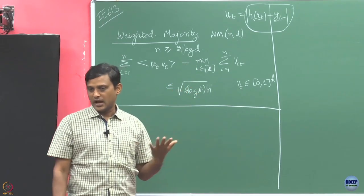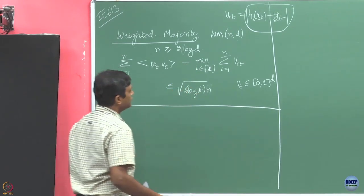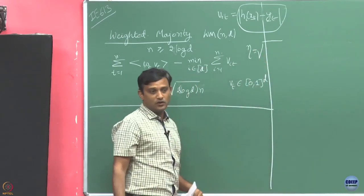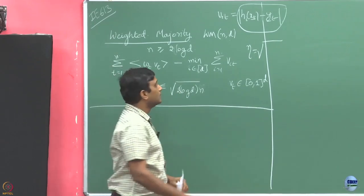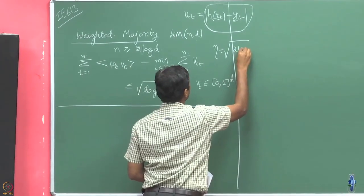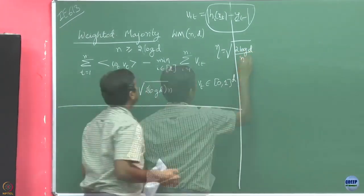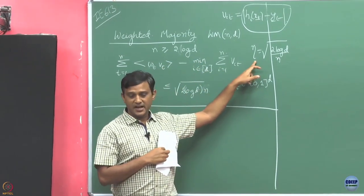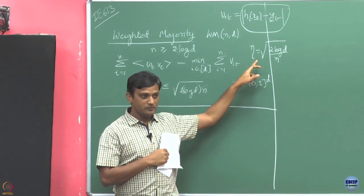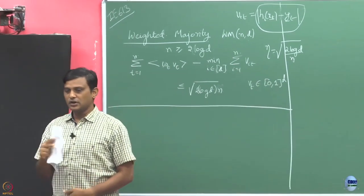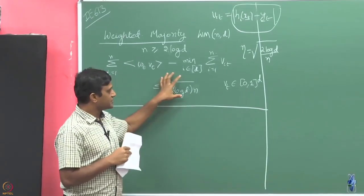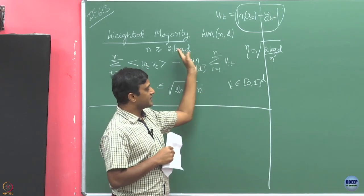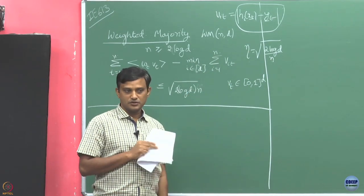If it is not, I do not know. Also notice that we have defined a parameter eta. In the weighted majority algorithm, eta is defined as square root of log d over n. Under this condition that n is greater than or equal to 2 log d, the value of eta is going to be less than 1. We are going to prove this under the assumption that eta is less than or equal to 1.